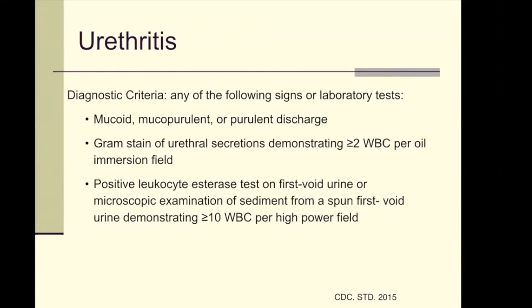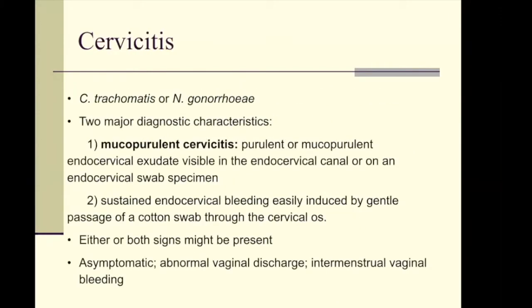Cervicitis is almost the same as urethritis, except it comes from the cervix. Same etiologic agents: gonococcal cervicitis from Neisseria gonorrhoeae and non-gonococcal cervicitis, most commonly from Chlamydia trachomatis. Neisseria and Chlamydia almost always appear together as causes. Diagnosis is based on presence of purulent or mucopurulent discharge visible in the endocervical canal or swab specimen, and sometimes bleeding induced by passage of a cotton swab through the cervical os.